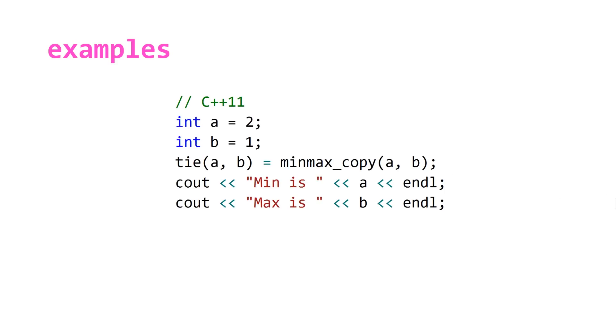So using minmax_copy here, this will output min is 1 and max is 2 as we would like. This is just something to keep in mind when using the tie function with algorithms that return references.